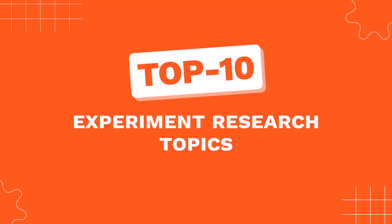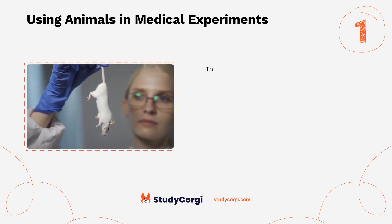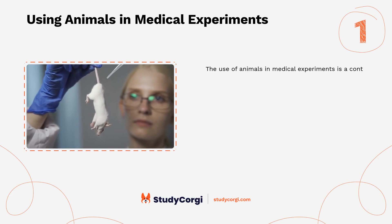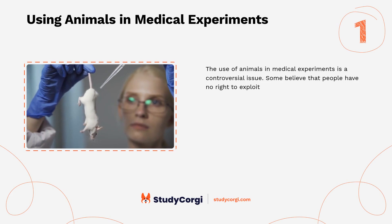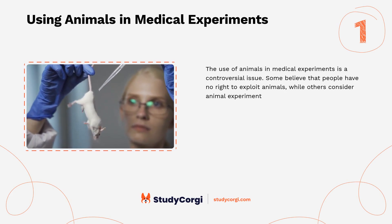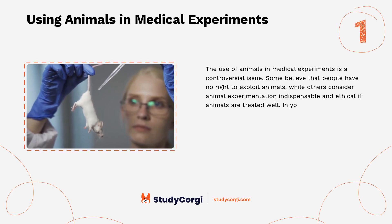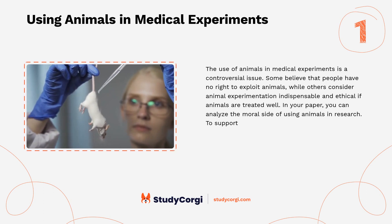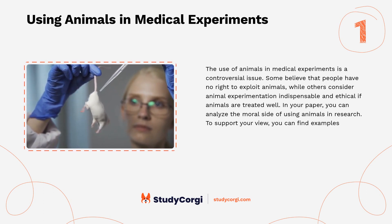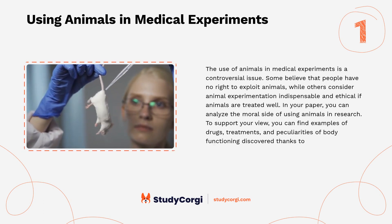Top 10 experiment research topics. Using animals in medical experiments: the use of animals in medical experiments is a controversial issue. Some believe that people have no right to exploit animals, while others consider animal experimentation indispensable and ethical if animals are treated well. In your paper, you can analyze the moral side of using animals in research. To support your view, you can find examples of drugs, treatments, and peculiarities of body functioning discovered thanks to animal research.